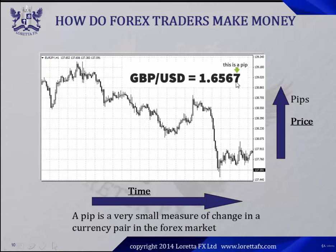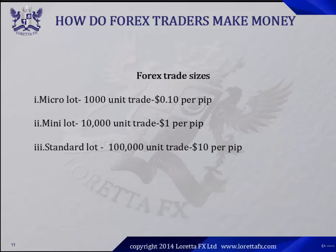So here we have a pip — this seven represents a pip. If the market moves from 67 to 68, then we have a one pip move. If the market moves from 67 to 70, then we have a three pip move. That's essentially what a pip is, and we use pips to calculate our profits in the forex market.